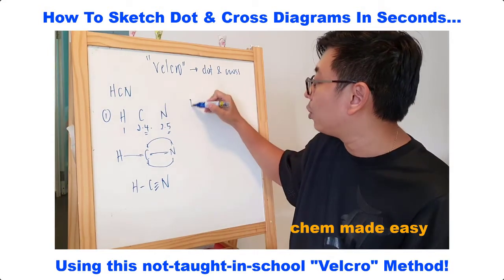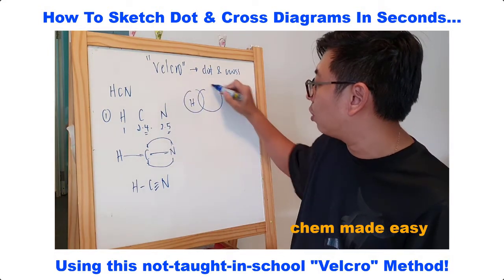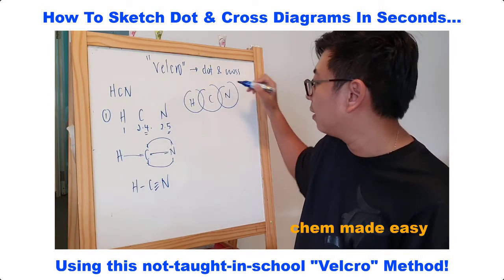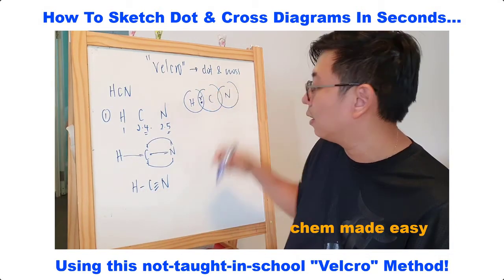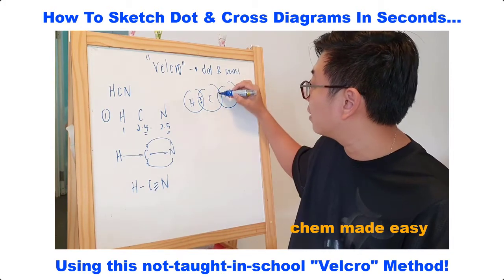Once you can get here, you can then go ahead and draw your dot and cross diagram. Between hydrogen and carbon you have one bond, so that's one pair of electrons. Between carbon and nitrogen you have three bonds, that's three pairs.